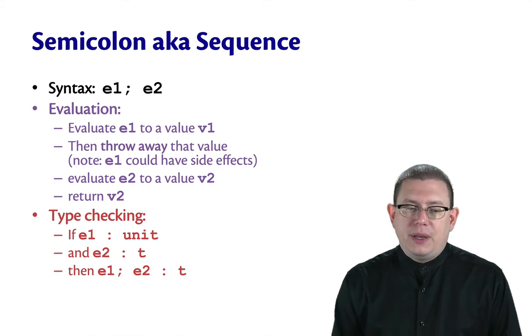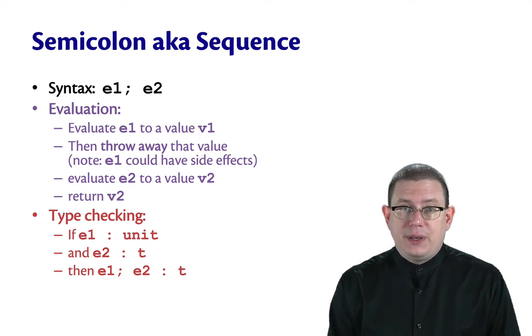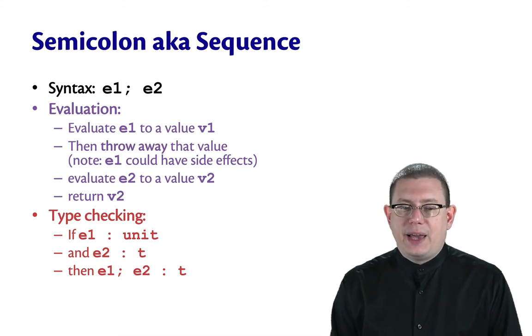For type checking, if E1 has type unit, and E2 has type t, then E1 semicolon E2 has type t.